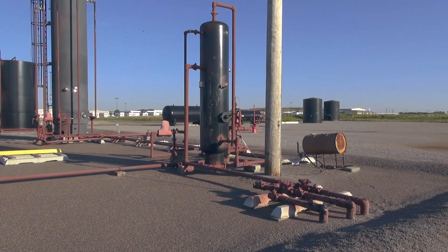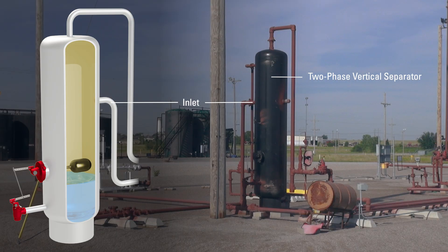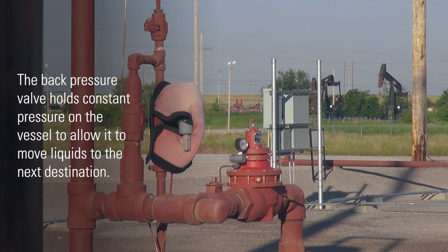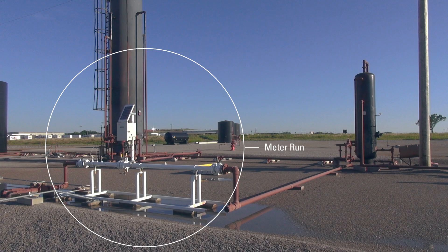The flow line coming from the wellhead comes up to this point. All the oil, all the fluid, all the gas is coming right through this line to this two-phase vertical separator. Gas, being lighter than liquid, rises to the top of the vessel — that is where the natural gas breaks out of the well stream. It comes down this pipe and into a Kimray backpressure valve. The backpressure valve holds constant pressure on the vessel to allow it to move liquids to the next destination. Any gas over the set point will be sold down this line over to the meter run, where the gas is measured and recorded and then sold typically to an outside source or a midstream company.